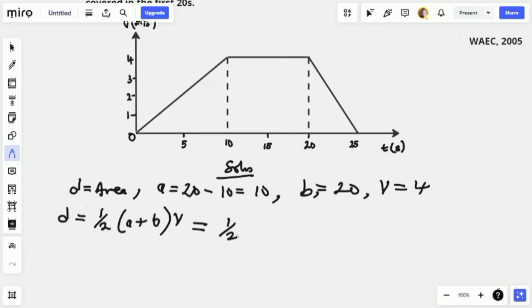That will be 1/2 open bracket, our a is 10, plus our b is 20, times our maximum speed or height which is 4.